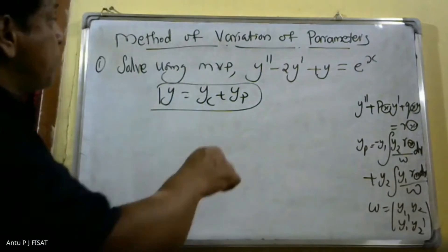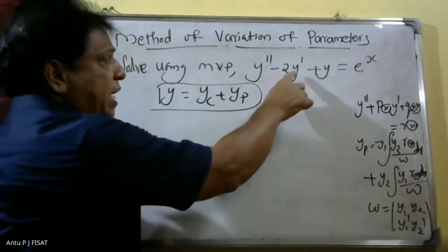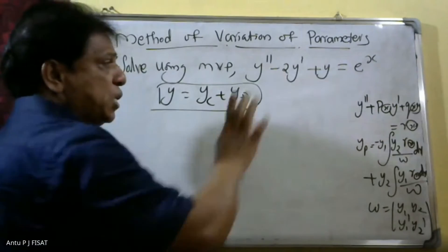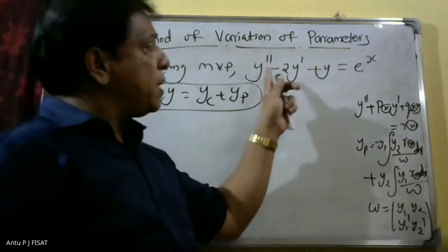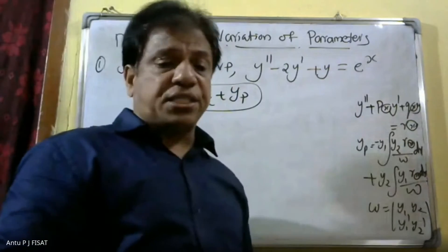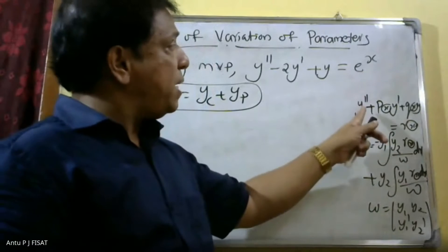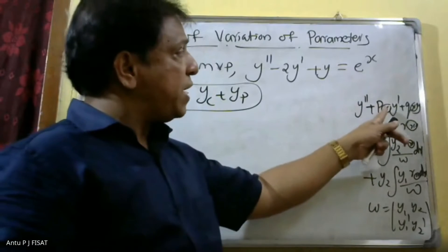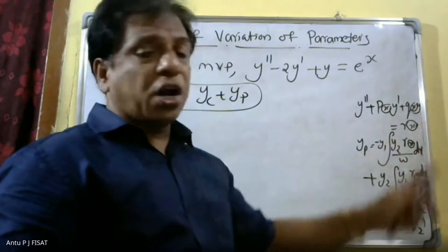The problem is: y double dash minus 2y dash plus y is equal to r(x). First we compare this with our standard equation: y double dash plus p(x) y dash plus q(x) y is equal to r(x).